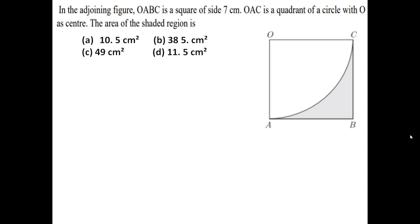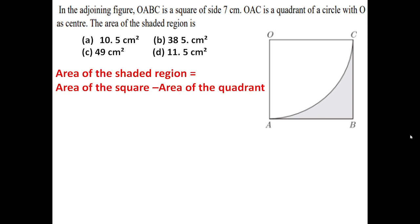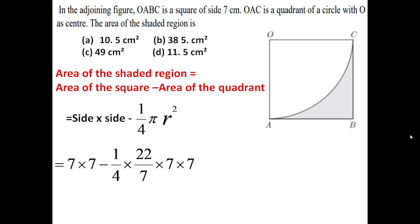In the adjoining figure, OABC is a square of side 7 cm and OAC is a quadrant of a circle with O as centre. We need to find the area of the shaded region. Area of shaded region = area of square − area of quadrant. The side of the square equals the radius of the quadrant. Area of square = 7 × 7 = 49. Area of quadrant = (1/4)πr² = (1/4) × (22/7) × 49 = 77/2 = 38.5. So shaded area = 49 − 38.5 = 10.5. First option is correct.